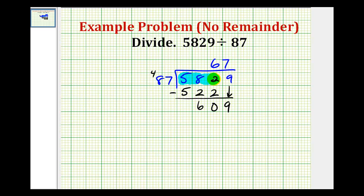7 times 7 is 49, carry the 4. 7 times 8 is 56, plus the 4 we carry gives us 60, so 609.